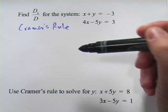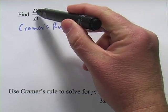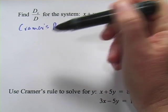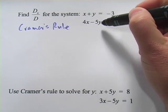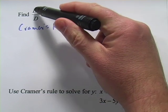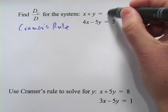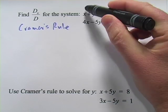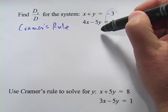What Cramer's Rule says is that the solution for any one of those variables is this big D sub x, if you're looking for x, over big D. And big D is the determinant of the coefficient matrix of this side. And big D sub x is the determinant of a matrix where the coefficient matrix you substitute the answers over here in for the x column. Or if you were looking for D sub y, you'd substitute those answers in for the y column.